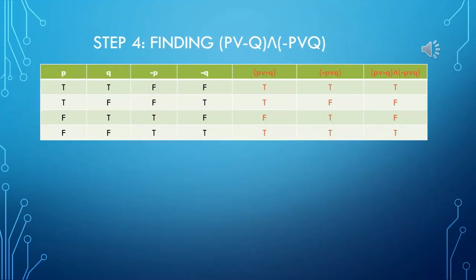We have completed the P or negative Q column and negative P or Q column. Now it's time to combine these two columns using the AND operator. With the AND operator, you have to have both the values true in order to get true as your answer. If it's T and F, obviously the answer will be F. So let's start.